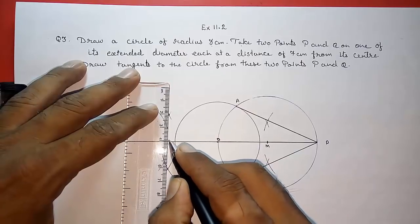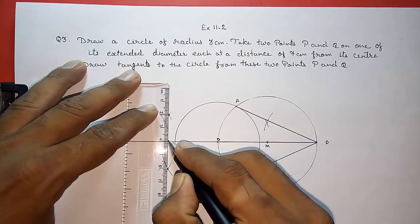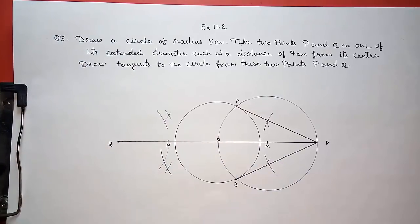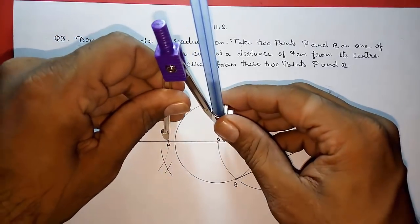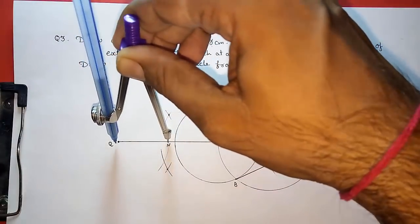Now I will get the midpoint that will come here. Give that point name N. Taking ON as the radius, draw another circle. Yes. Here also and here also.